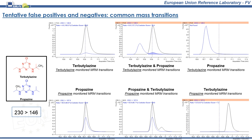Propazine and terbutylazine are constitutional isomers, sharing at least one mass transition: m/z 230 precursor ion to m/z 146 fragment ion. Again, due to their similarities, they can be present together in the other's acquisition window as interferences, and, depending on the optimized mass transitions, potentially both transitions can be inadequately identified as originating from the wrong compound.